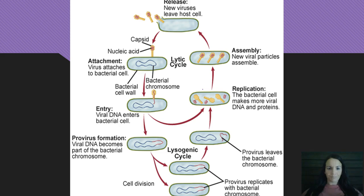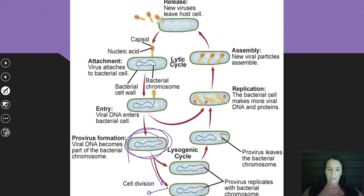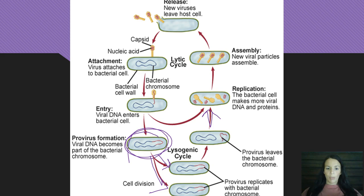Here's a look at lytic versus lysogenic — pause and study this picture. Starting with a cell: in the lysogenic cycle, it replicates and that DNA is in both daughter cells. If it leaves the lysogenic cycle, it goes into the lytic cycle. So if you have an outbreak — people with HIV or AIDS get sores that appear, or if you have herpes you get sores — that outbreak is the lytic cycle.